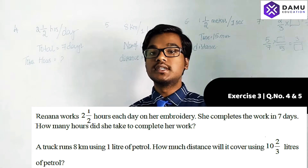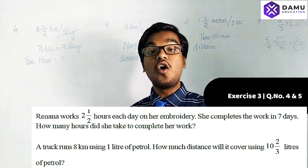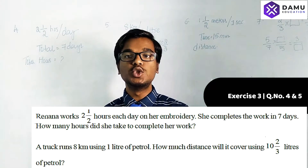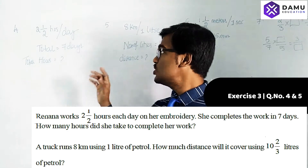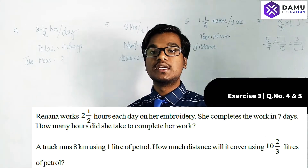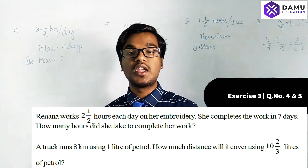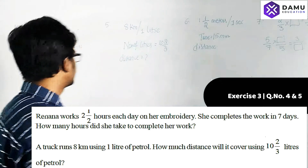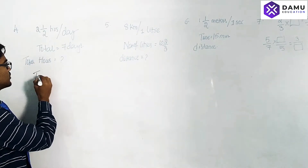She completed her work in seven days. How many total number of working hours does it take to complete the work? So in each day two and a half hours, and total number of days are seven days — how many hours did she take in total?